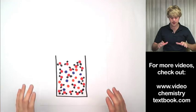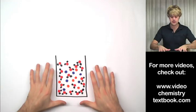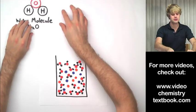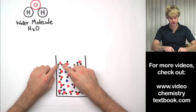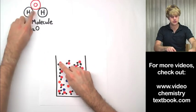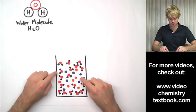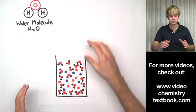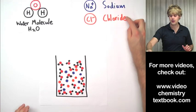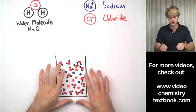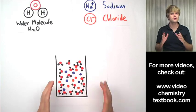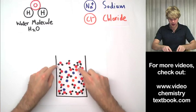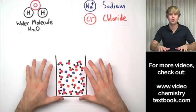So this is what we'd see in our zillion times magnified glass of water. One of the things we see is the water molecules — one oxygen connected to two hydrogen atoms. There are other things in here too: these orange and blue circles which represent the sodium and chloride atoms that make up the table salt dissolved in here.